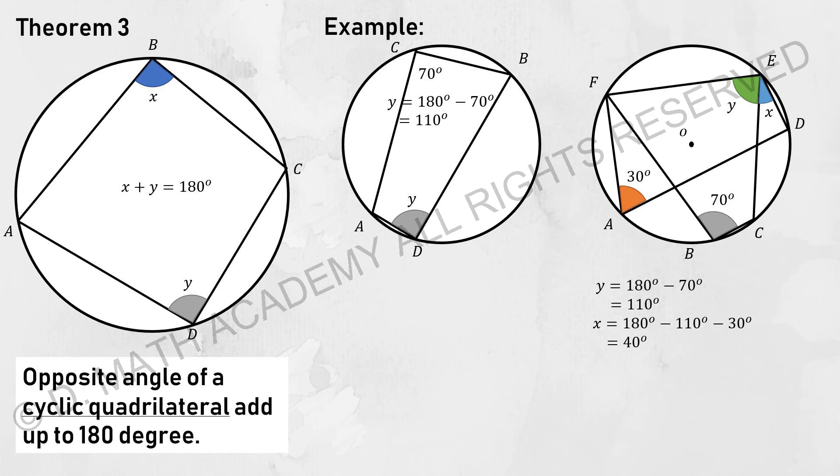For the next circle over there, there's actually two quadrilaterals. For me to identify the first answer, I will actually focus on FEBC, where 70 plus Y goes to 180. Y is actually 110.